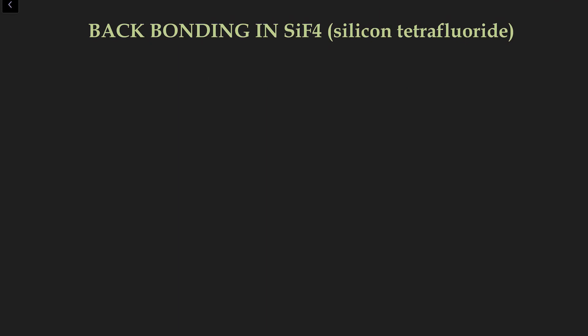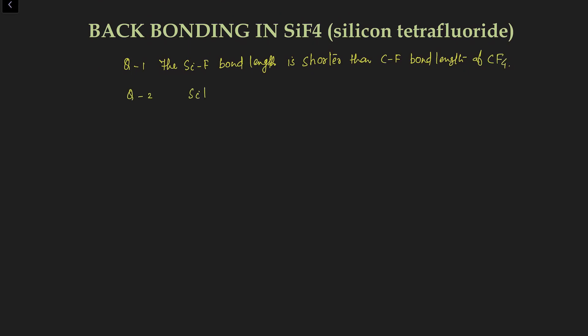Before starting the full discussion about back bonding in silicon tetrafluoride, look at some questions. Question number one: the Si-F bond length is shorter than the C-F bond length of CF₄. Question two: SiF₄ (silicon tetrafluoride) is more stable than carbon tetrafluoride, in spite of having the same sp3 hybridization and same geometry. Why do these variations exist?